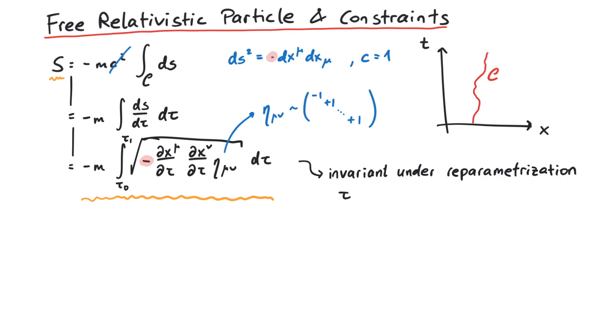That is, if we change from tau to a function tau tilde which depends on tau, the transformation factor from the integral measure and the one under the square root cancel exactly, leaving the action invariant.